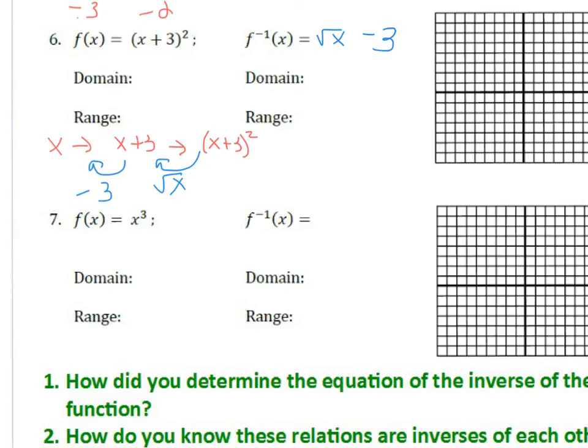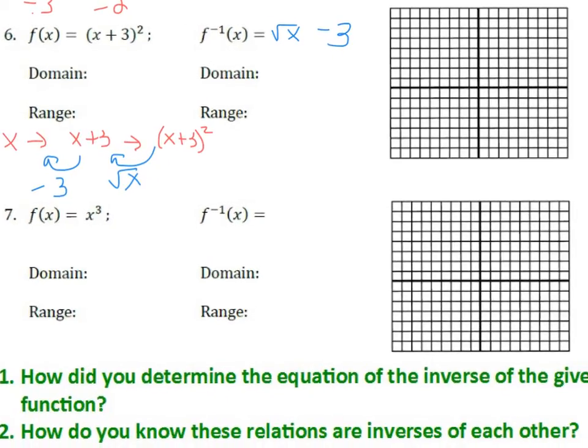Now to graph f of x. Again, it's the quadratic, it's the parabola shape, and it's been moved to the left 3. Right here. And then another point, let's plug in, let's plug in 0. That's a nice one. When you plug in 0, 3 squared is 9.